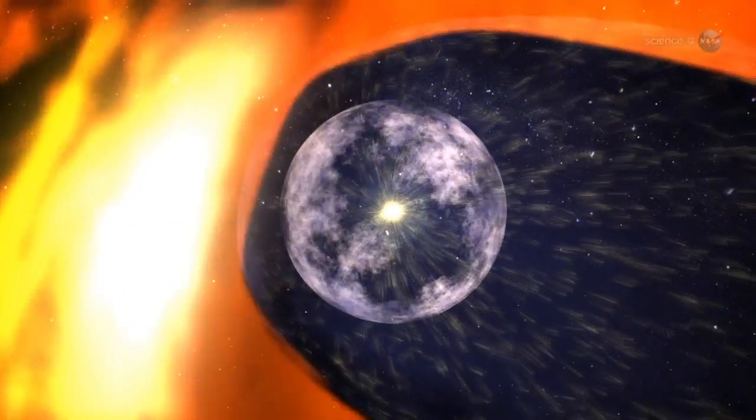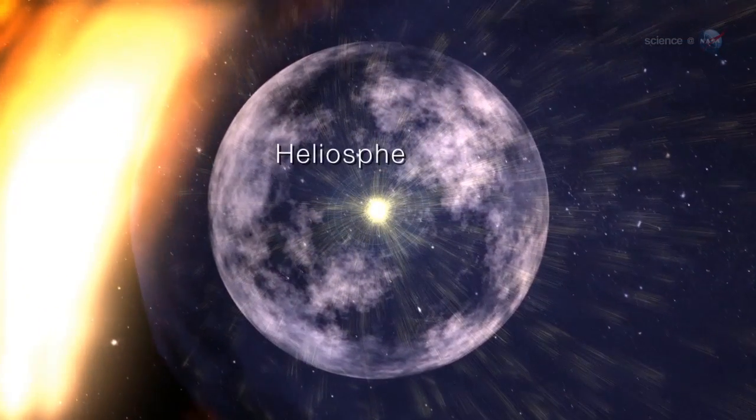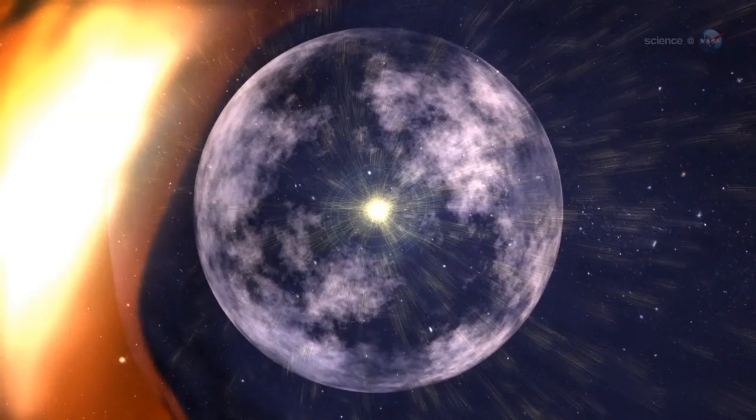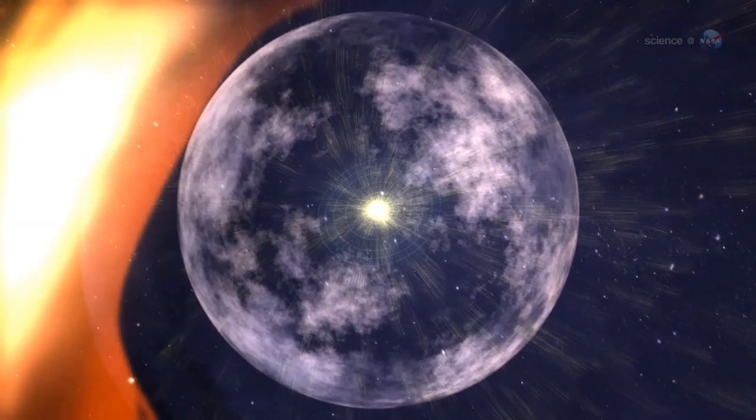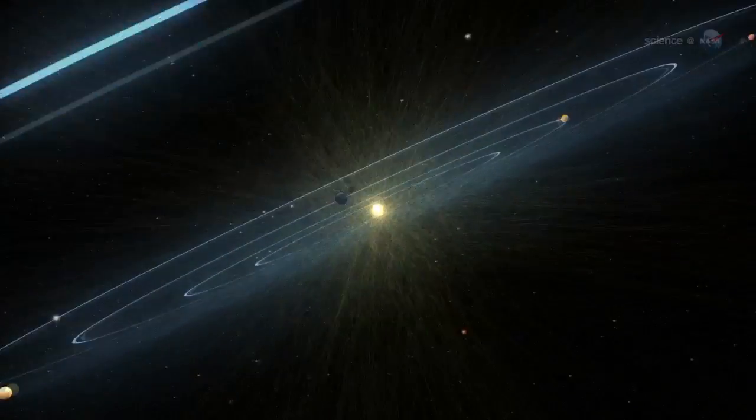Our solar system is surrounded by a magnetic bubble called the heliosphere that separates us from the rest of the Milky Way. Outside the heliosphere lies the realm of the stars, or interstellar space. Inside lies the Sun and all the planets.